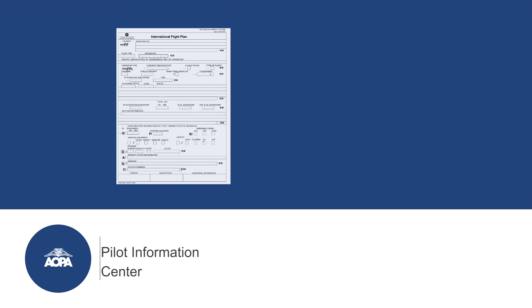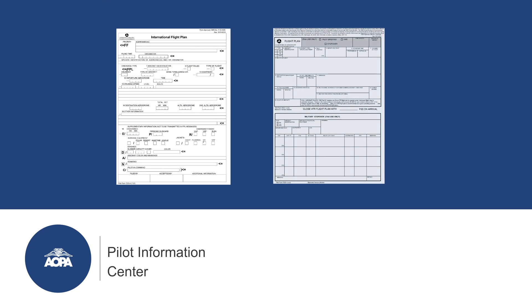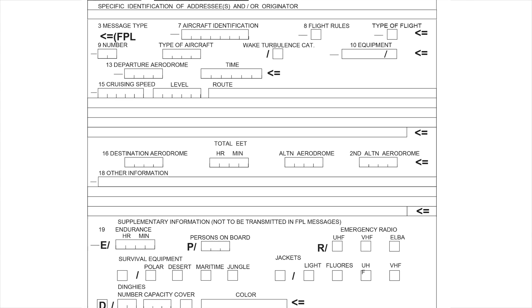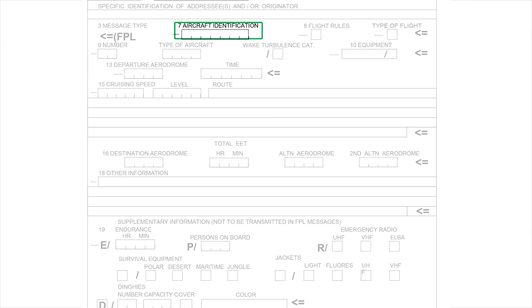The differences between an ICAO flight plan and an FAA flight plan are pretty small, though it does require some close attention to make sure you've got the details correct. Some items are the same as they've always been: aircraft ID or tail number, aircraft type, fuel endurance, and number of people on board.